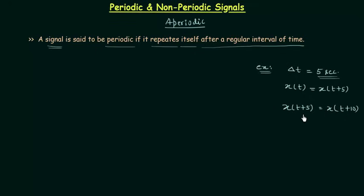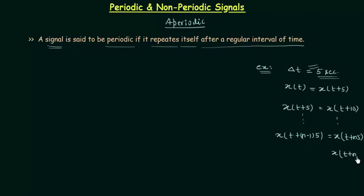In the same way, x(t + (n−1)·5) = x(t + n·5). We can generalize this: in place of 5 we write the fundamental period T0, so x(t + n·T0). In case of periodic signals, x(t) = x(t + n·T0).